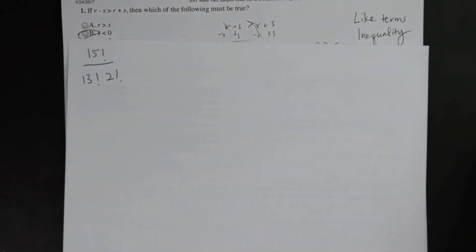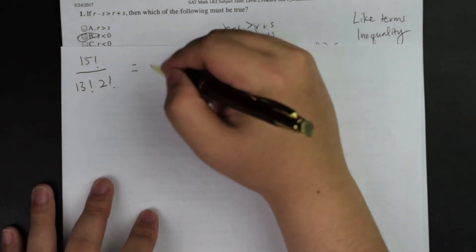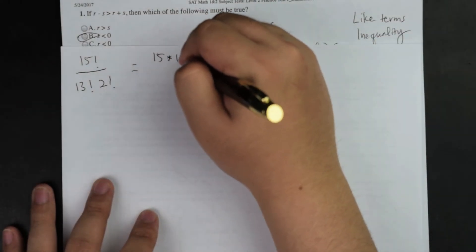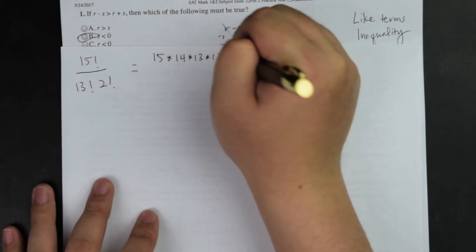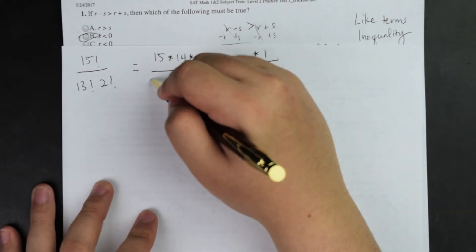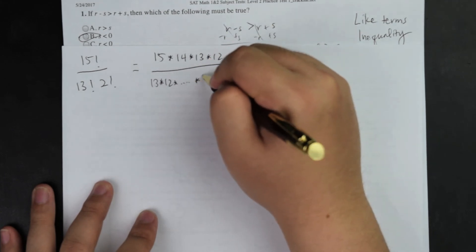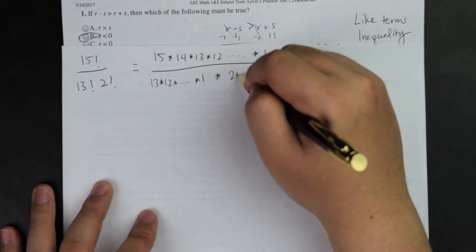Basically the idea behind a factorial is that it's a series of numbers starting from that original number to whatever values left. So for example, for 15, when I get 15 factorial, it's going to be 15 times 14 times 13 times 12, and I'll keep going doing 11, 10, 9, 8, 7, 6, 5 until I get to 1 divided by 13, which is 13 times 12 and so on keep going to 1, and then times 2 factorial will be 2 times 1.